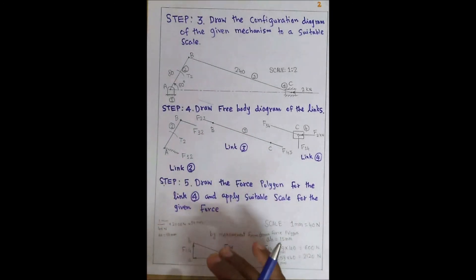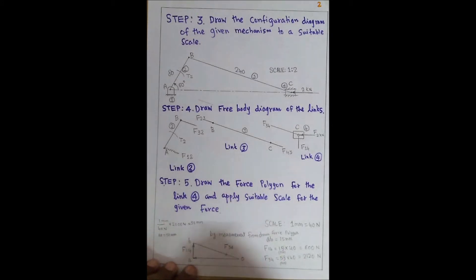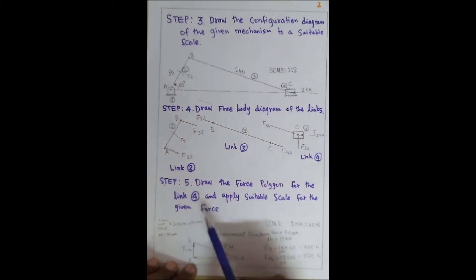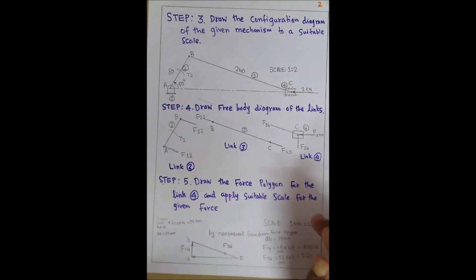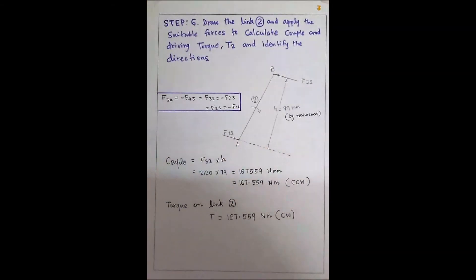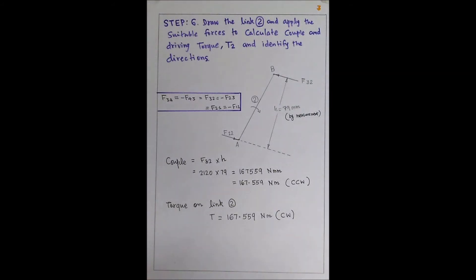From step 5, we have calculated the force acting on link 3 (F34 = 2120 N) and the reaction force F14 = 600 N. Now going to step 6: draw link 2 and apply the suitable forces to calculate the couple and driving torque T2, and identify the direction of the driving torque and couple.